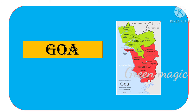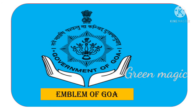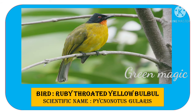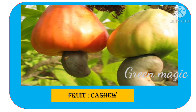Our second state is Goa. This is the map of Goa. This is the emblem of Goa. Animal: Gaur. Bird: Ruby-throated Yellow-bluebill. Fruit: Cashew.